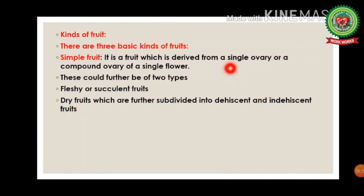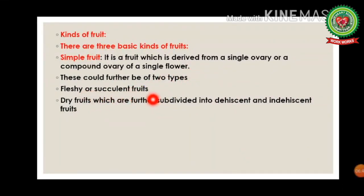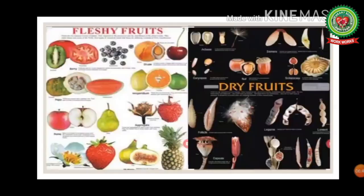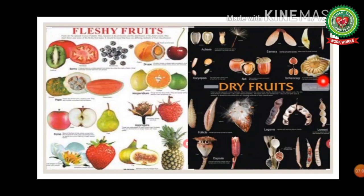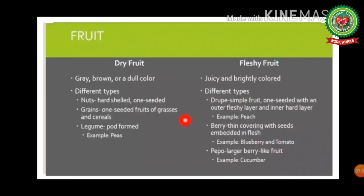There are basically three kinds of fruit: simple fruit, aggregate fruit, and multiple fruit. A simple fruit is derived from a single ovary or a compound ovary of a single flower. It can be further divided into fleshy or succulent fruits, and dry fruits, which are further divided into dehiscent and indehiscent fruits. Examples of fleshy fruits shown include apple, tomato, pear, and strawberries.